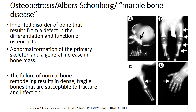Osteopetrosis is quite rare, but it is also called marble bone disease. It is an inherited disorder of the bone that results from a defect in differentiation and function of osteoclasts, abnormal formation of the primary skeleton, and a general increase in bone mass. The failure of normal bone remodeling results in dense, fragile bones that are susceptible to fracture and infection.